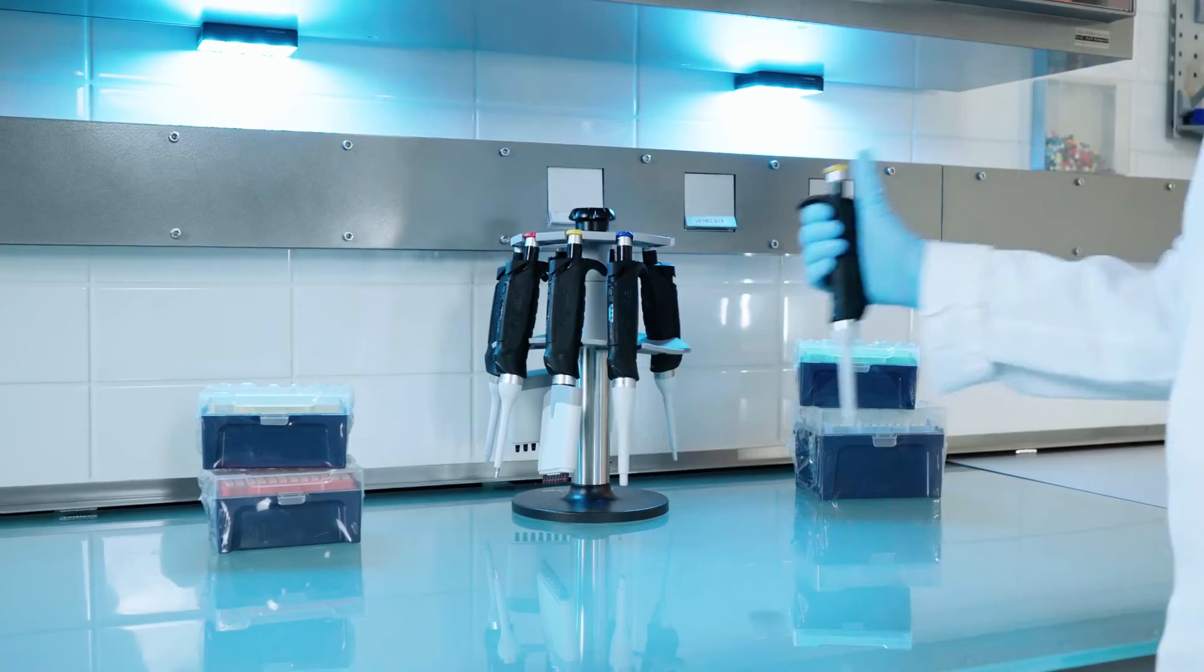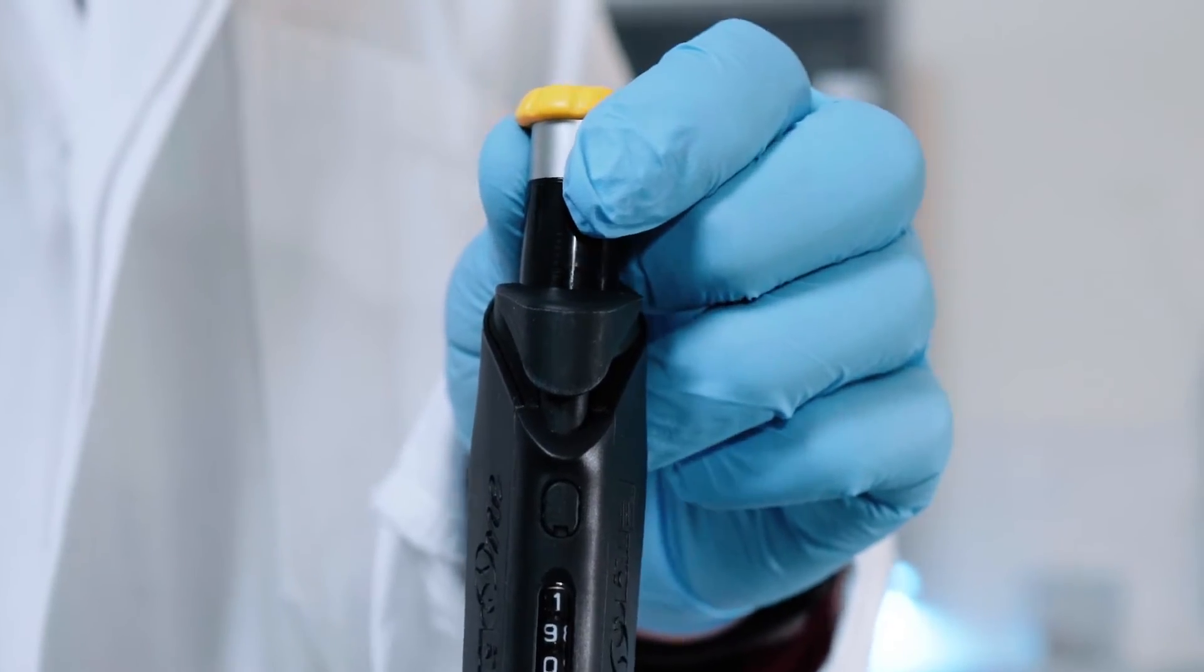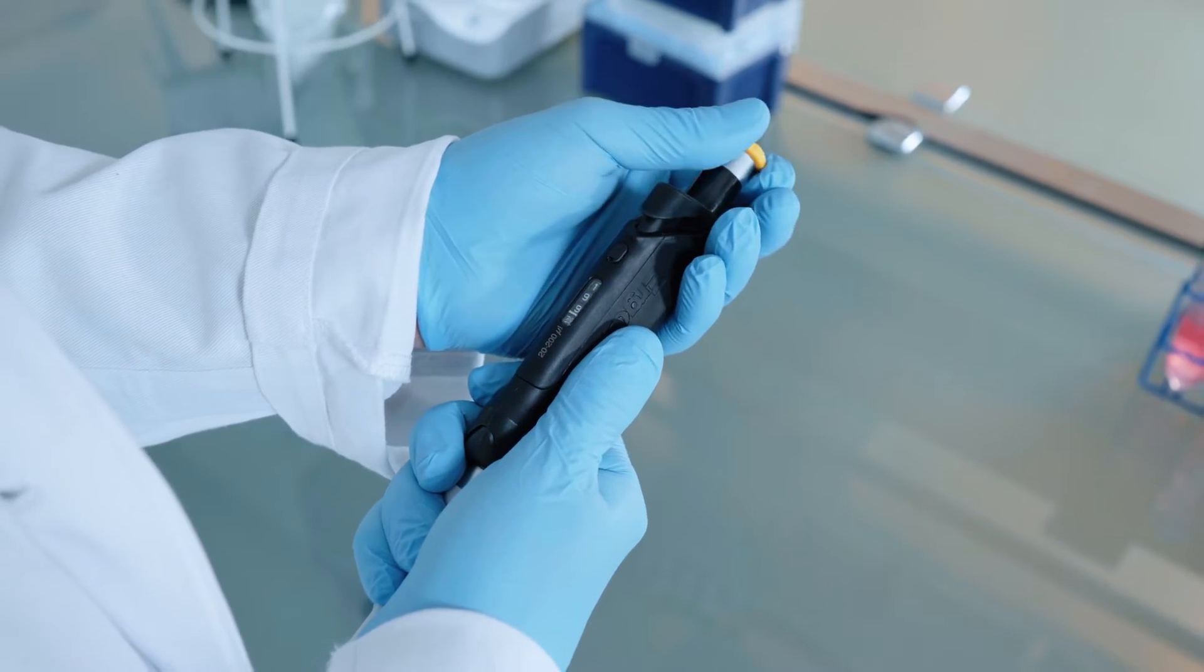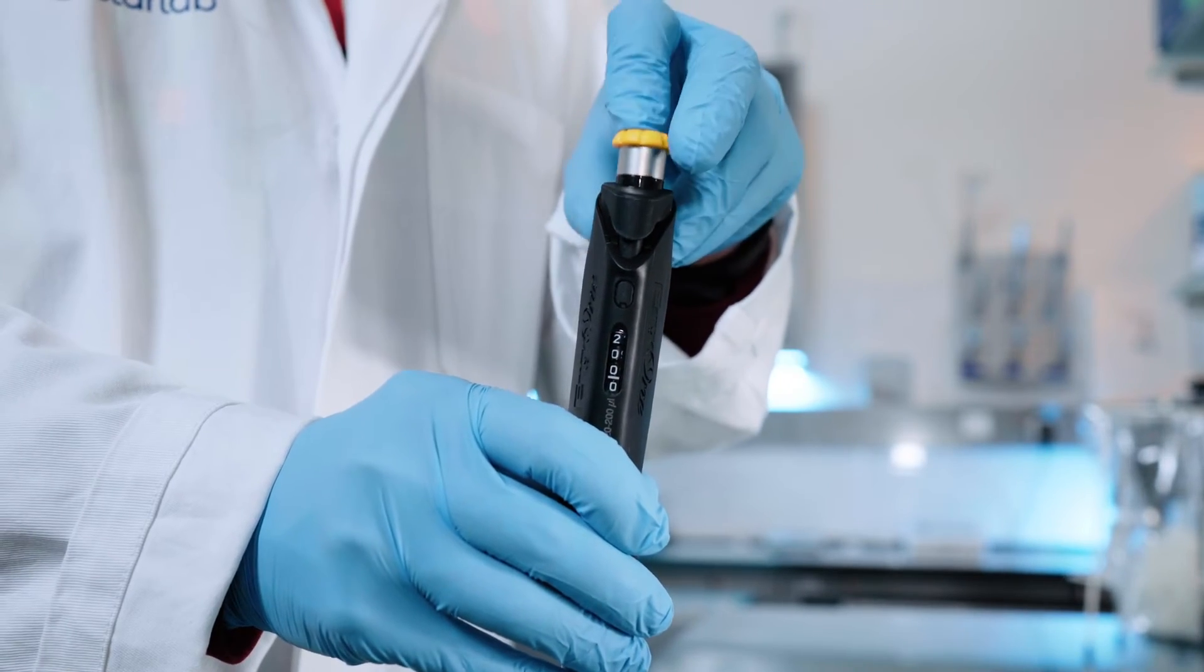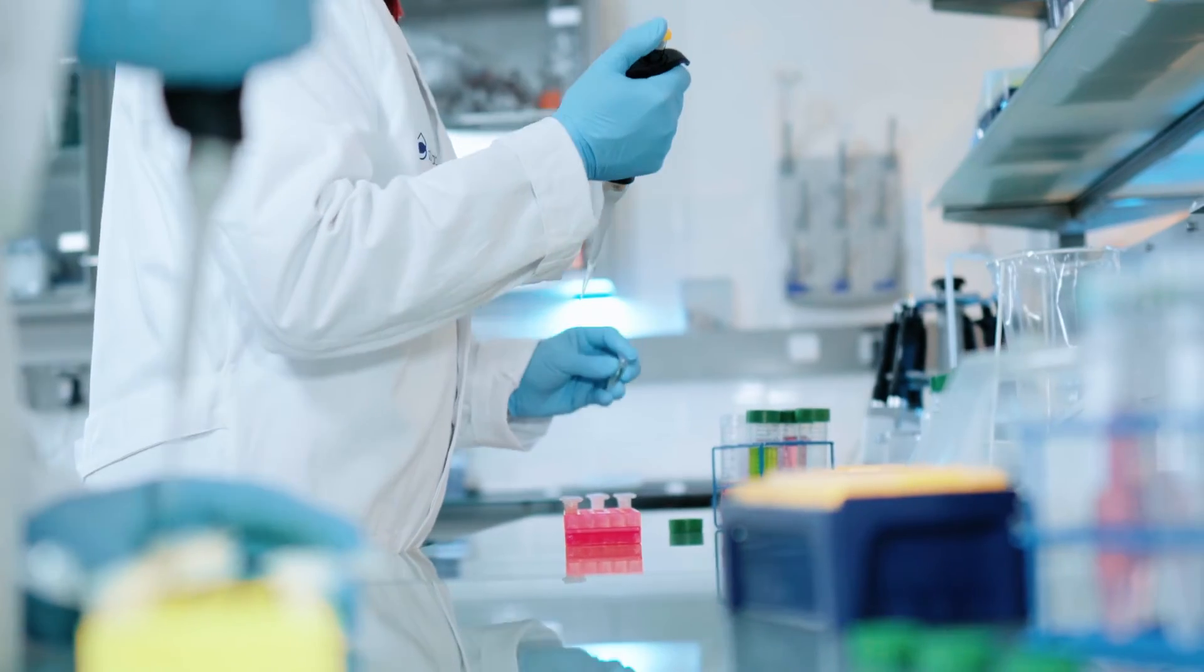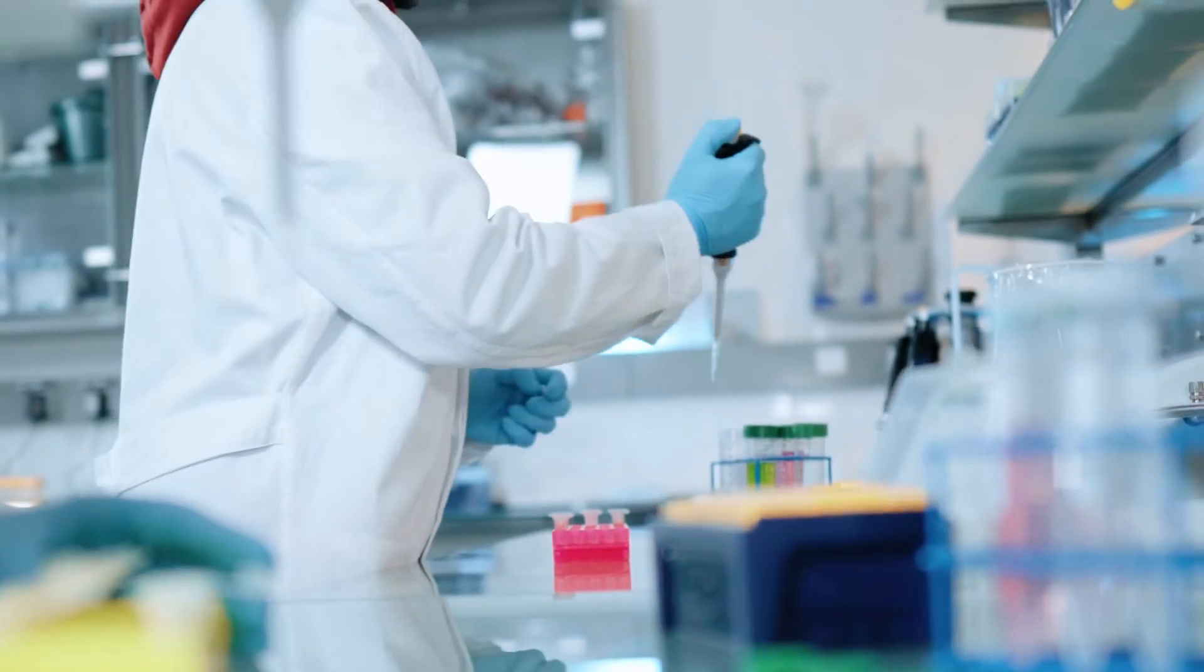Operating the pipette is also as easy as can be. Simply pull up the plunger and turn to set the volume. Then push the plunger down to activate the volume lock, so you can keep pipetting without worrying about the volume drifting.